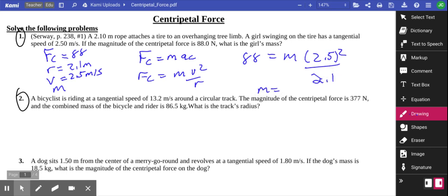and when we do, we get 88 times 2.1 divided by 2.5 squared, which gives us a mass of 29.6 kilograms.